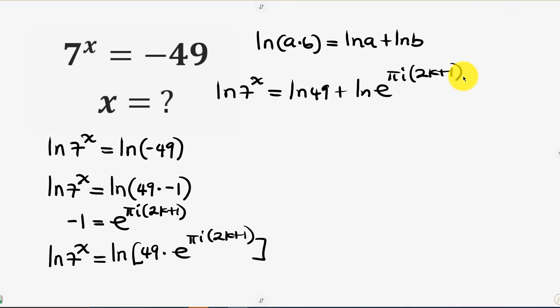Now simplifying further, we have ln of 7^x equal to ln of 49, which is the same as 7 squared, plus ln of e to the power of pi i times (2k + 1).